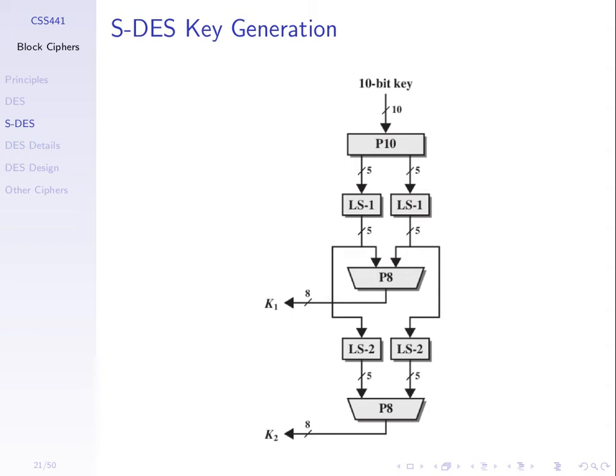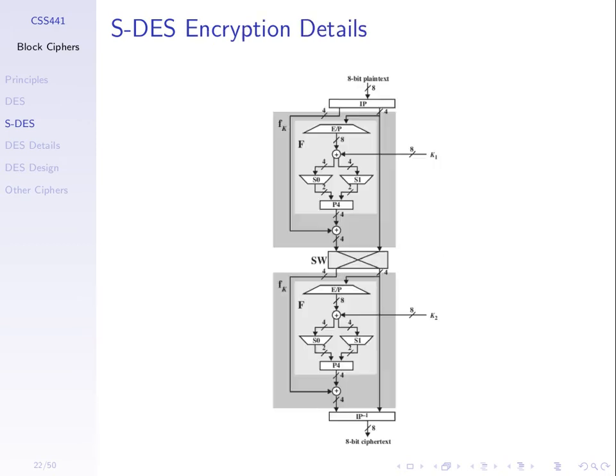If somehow I knew K1 and K2, because the algorithm is known by the attacker, I can get the key. But for the encryption algorithm, which uses those two round keys, we'd like it such that the attacker, given the ciphertext, cannot go backwards and get the plaintext without the key. Or given a plaintext and ciphertext pair, even if the attacker knows both, it should be hard for them to find the key. The algorithm should be designed so that it's hard for them to obtain the key.